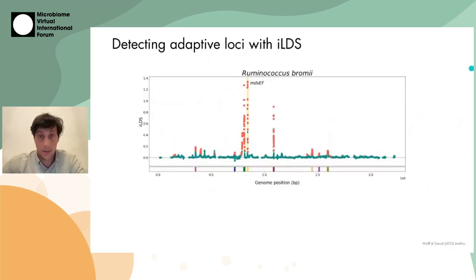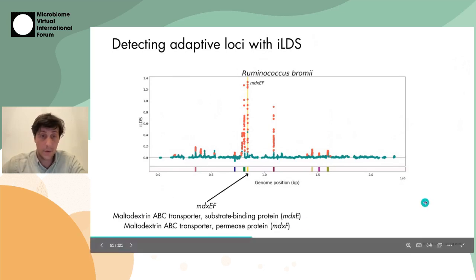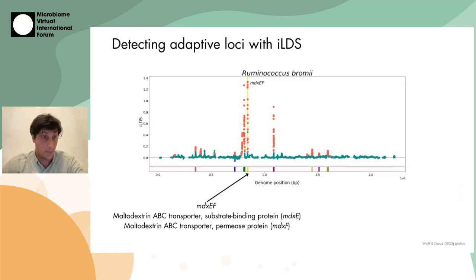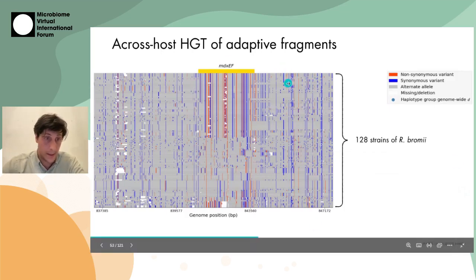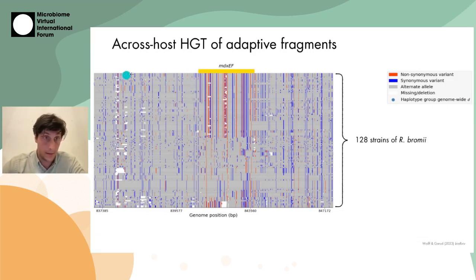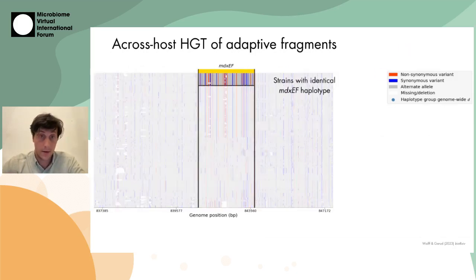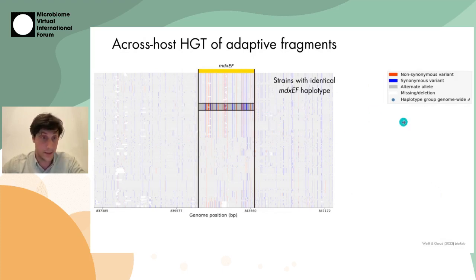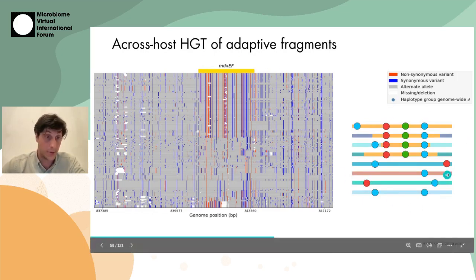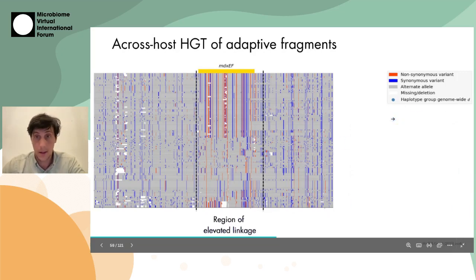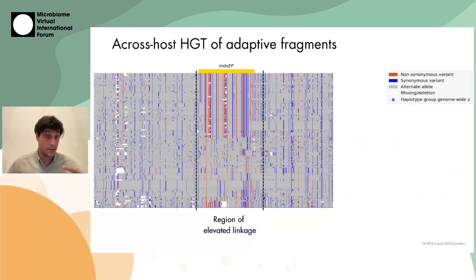Next, we looked at a typical gut microbiome species, R. bromide, focusing on the MDXEF genes, which are involved in maltodextrin metabolism — maltodextrin is a synthetic starch. Looking at 128 strains, we plotted haplotypes where each line is a strain and colors indicate where variants are, then grouped strains with identical MDXEF haplotypes. This approximately 3,000 base-pair region shows multiple groups of identical haplotype strains. The empirical data looks almost exactly like our model expectation — a region of elevated linkage with much higher non-synonymous than synonymous linkage, giving us high confidence this is a genuine selective sweep.